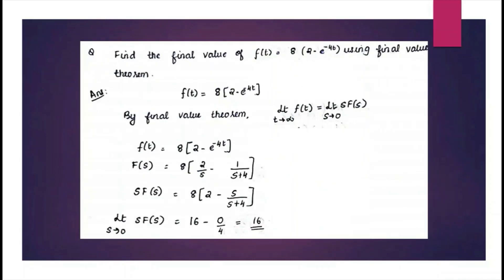Next, find the final value of f(t) = 8·(2 − e^(−4t)) using the final value theorem. F(s) = 8·(2/s − 1/(s + 4)). Multiplying by s, we get 8·(2 − s/(s + 4)). Applying s = 0: s/(s + 4) becomes 0/4 = 0, so the result is 8·(2 − 0) = 16.